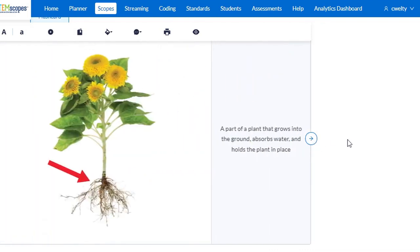Next one. Pay attention to the arrow in this picture. A part of a plant that grows into the ground, absorbs water, and holds the plant in place. What vocabulary word matches? Pause now if you need more time. That's the roots. It's pointing to the roots underground.